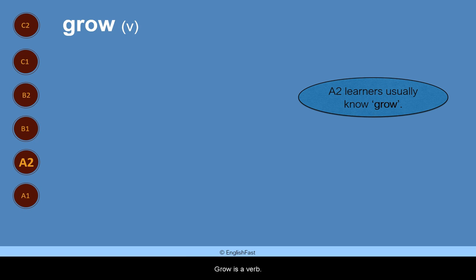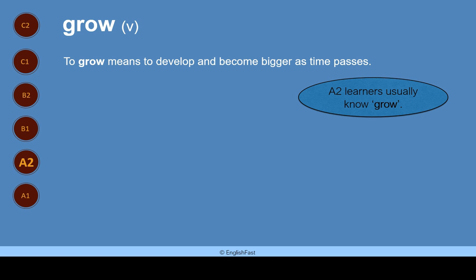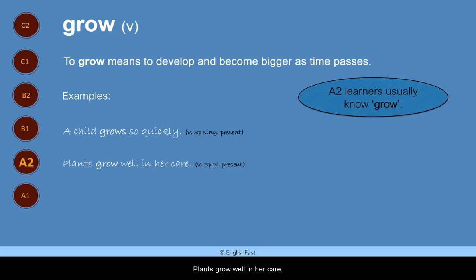Grow. Grow is a verb. A2 learners usually know grow. To grow means to develop and become bigger as time passes. Here are some examples. A child grows so quickly. Plants grow well in her care. He grew up in South Africa.